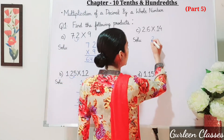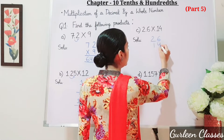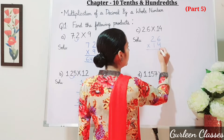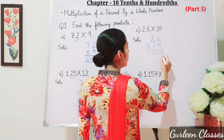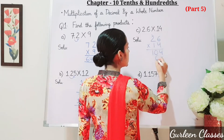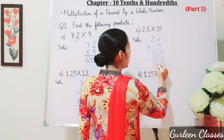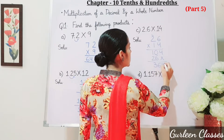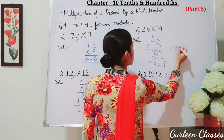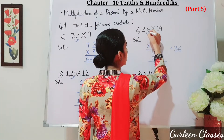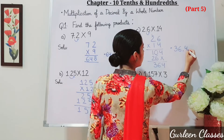Now part c: 2.6 into 14. So let us multiply 26 into 14. 6 fours are 24, 4 twos are 8 plus 2 is 10, 1 sixes are 6, 1 twos are 2. So the answer is coming 364. Now let us place the decimal point — after the decimal point there is only 1 digit. So the answer is 36.4.